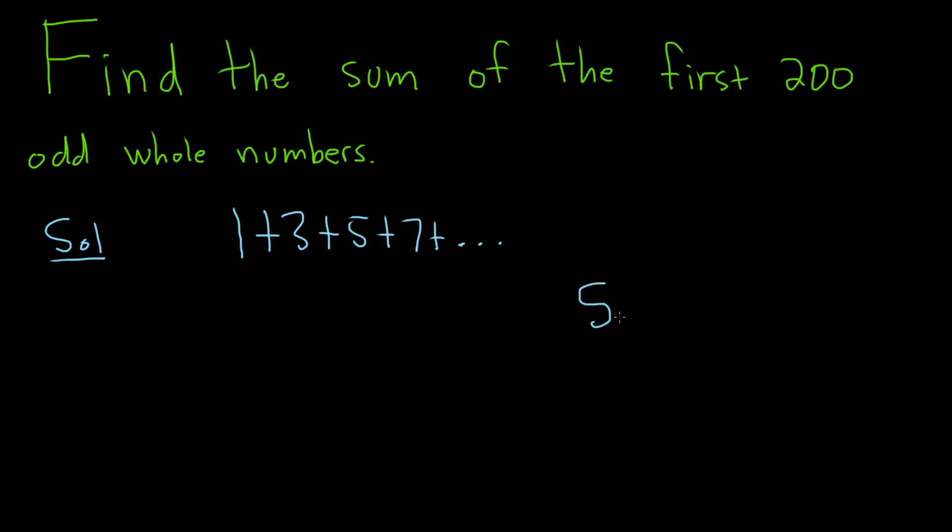So the sum of the first n terms of an arithmetic sequence is equal to n, which is the number of terms, and this problem here, it's going to be 200. The first term, a sub 1, which is 1, we already have that, plus the nth term, which we'll have to find, that's the last term, and it's all being divided by 2.